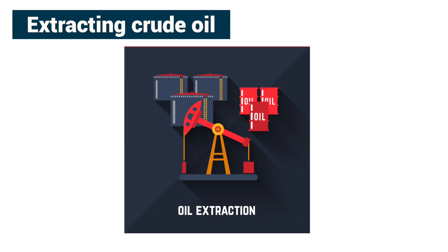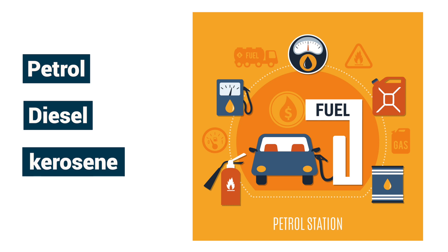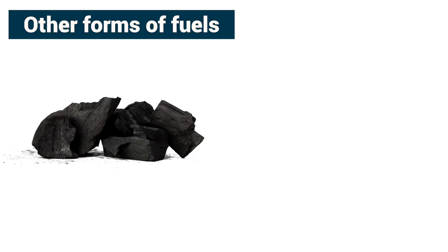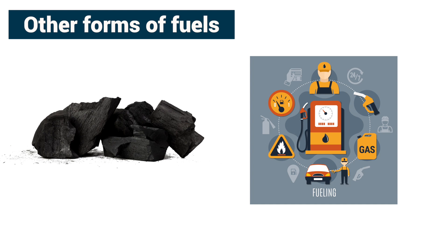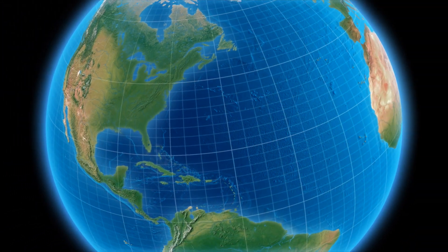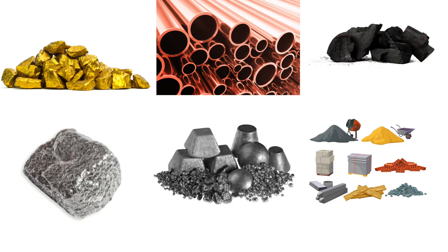We extract crude oil and use fuels like petrol, diesel, kerosene etc. Other forms of fuels like coal and gas are also used by us. Anything obtained naturally from earth can be called a mineral. All the above mentioned materials are a combination of minerals.